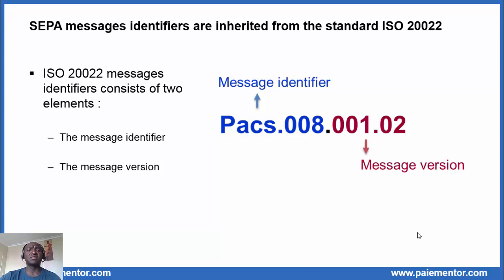In that standard, message identifiers consist of two elements. First, the message identifier itself — the four letters followed by the three first digits. And second, the message version — the remaining five digits. Let's first consider the four letters.